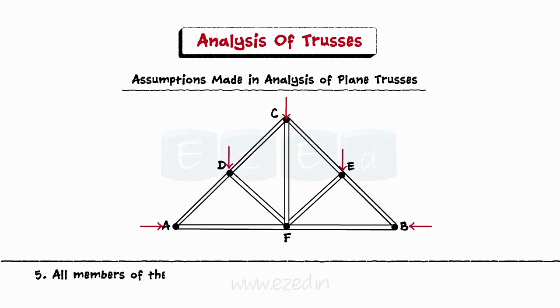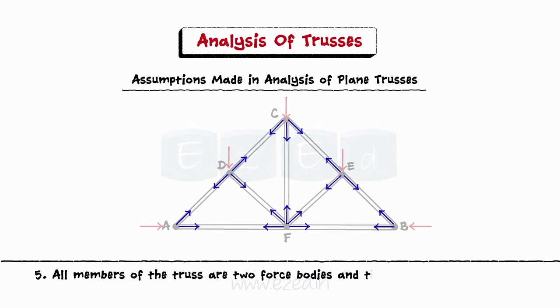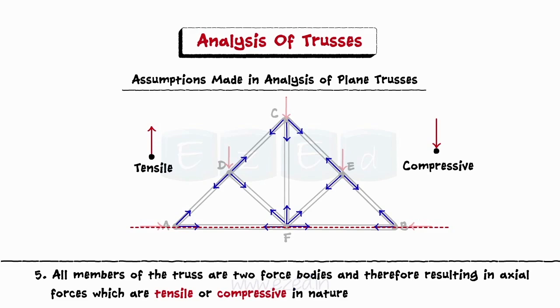All the members of the truss are two-force bodies and therefore result in axial forces which are tensile or compressive in nature.